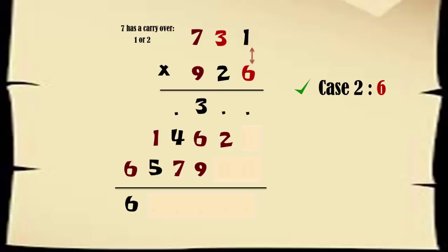Now we can quickly replace the remaining dots. 6 times 3 is 18. So 1 is carried over to the next digit. Perform this simple addition and the puzzle is solved.